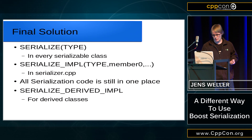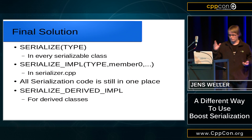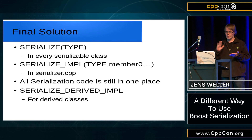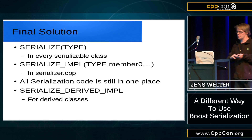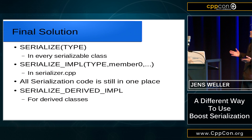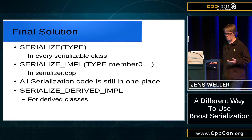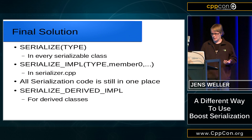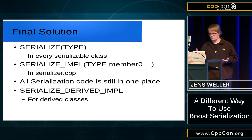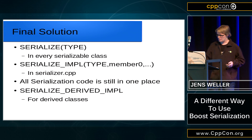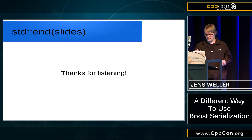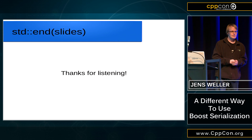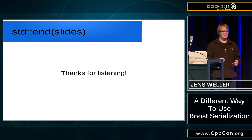And then I'm suddenly in a situation where I can serialize my classes without having to recompile everything. I also have a macro for derived types, because with serialization you need to call something for derived types. And that's it — five minutes, thank you.